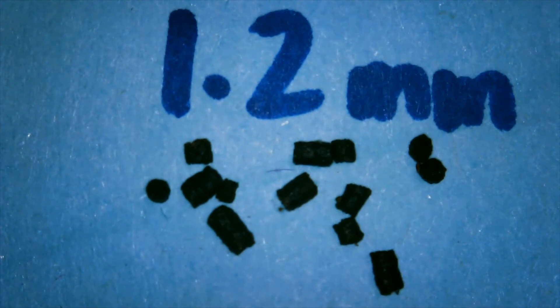Then we start getting into sizes that are more pellet shaped and these switch to a millimeter measurement. So these are 1.2 millimeter and you can see they're kind of pellet shaped.